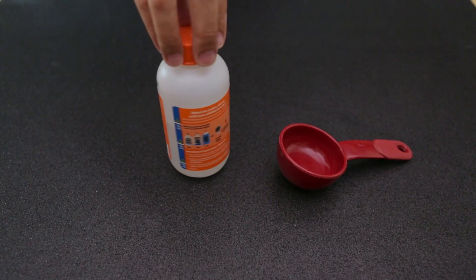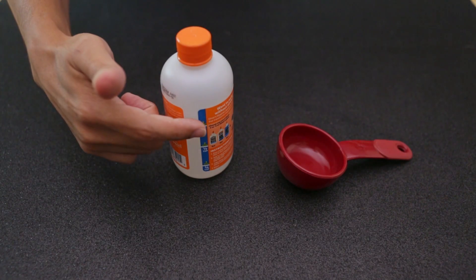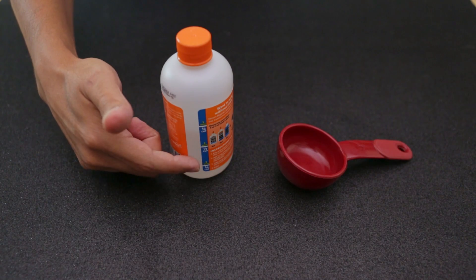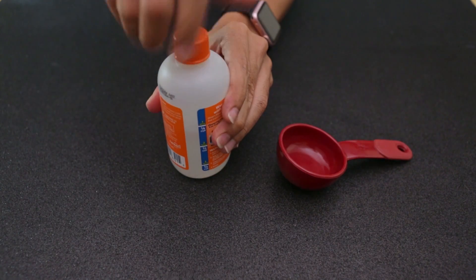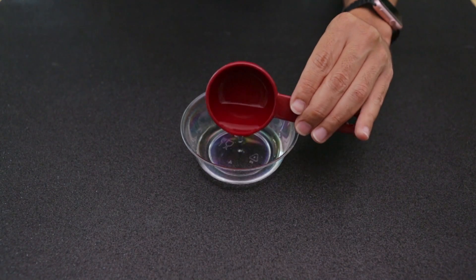We'll start with Elmer's Magical Liquid. This pre-made solution combines most of the ingredients and even has measuring markers on the side of the bottle. Just pour some of this into a measuring cup and get yourself a mixing bowl.